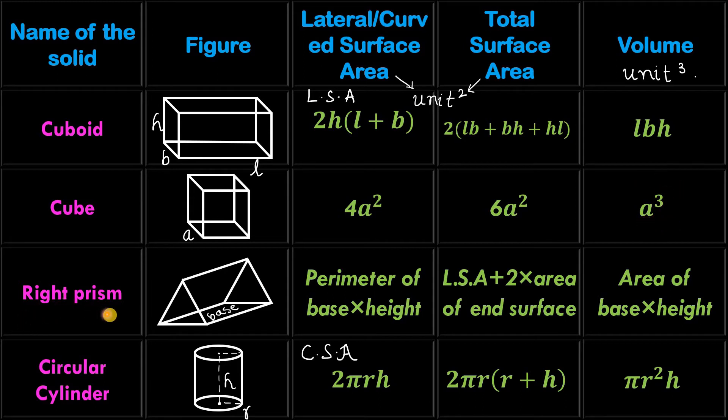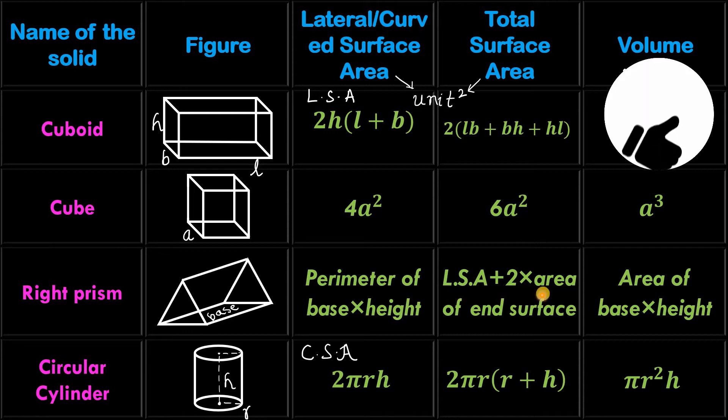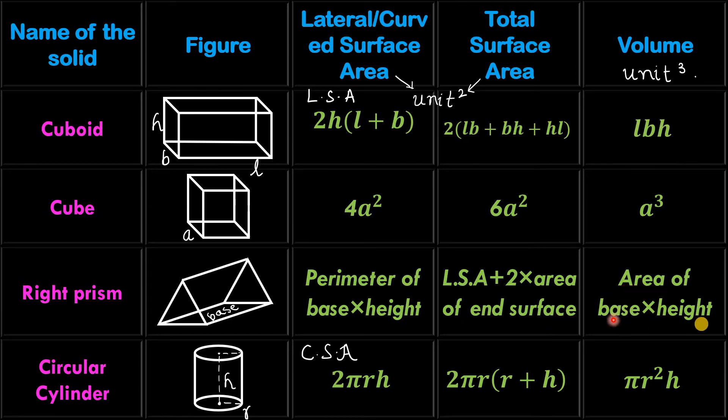It's right prism. It is also a curveless shape, so lateral surface area is perimeter of base into height. Its total surface area is LSA plus 2 into area of end surface. And its volume is area of base into height.